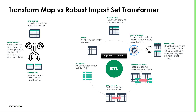You can transform the data as desired and then load that data to one or more target tables. The robust import set transformer is more efficient, especially when dealing with multiple target tables, because it requires only a single read operation to prepare the data for the target tables.